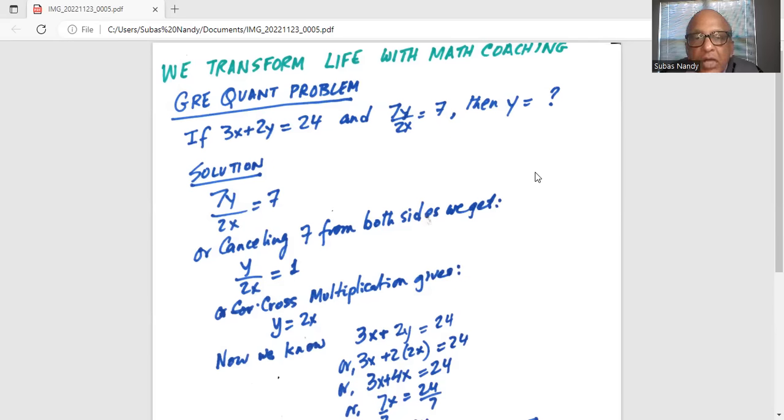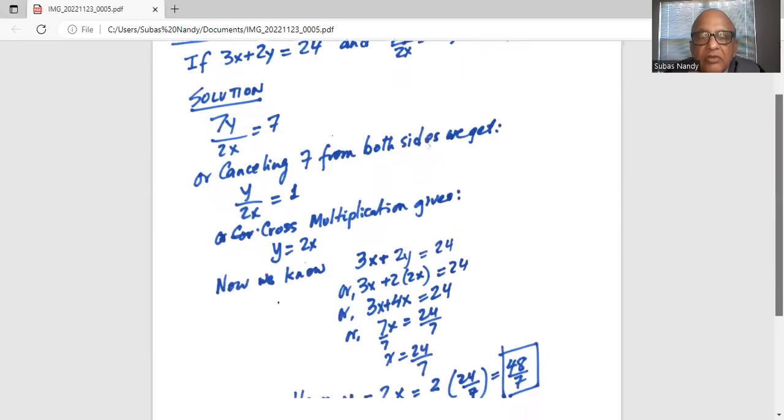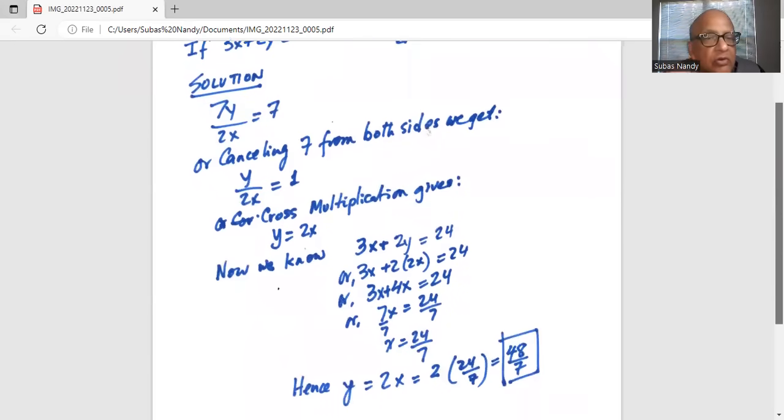Now we know 3x plus 2y equals 24. For y, we will substitute 2x. So 3x plus 2 multiplied by 2x equals 24. So 3x plus 4x equals 24, so 7x equals 24. Now we will divide by 7 on both sides to get x equals 24 by 7.